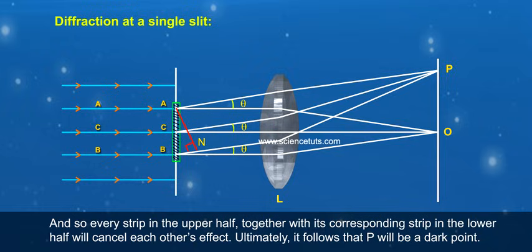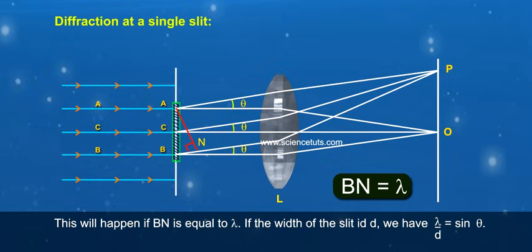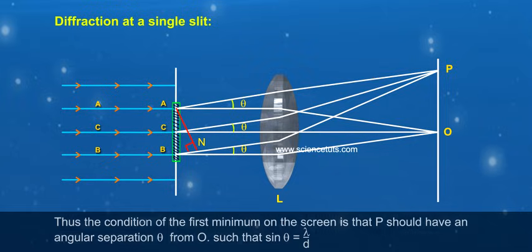This will happen if BN is equal to lambda. If the width of the slit is D, we have lambda by D equals sin theta. Thus the condition of the first minimum on the screen is that P should have an angular separation theta from O such that sin theta equals lambda by D.